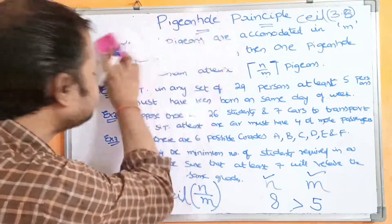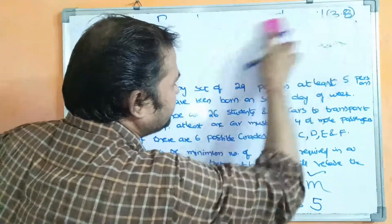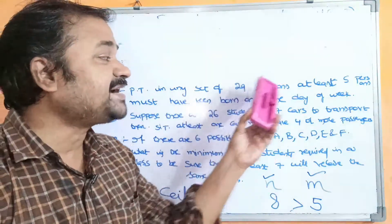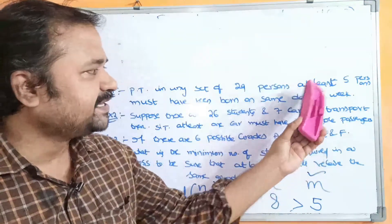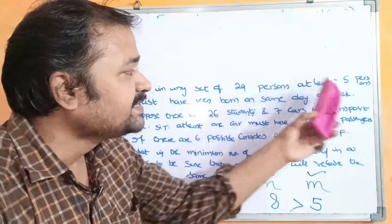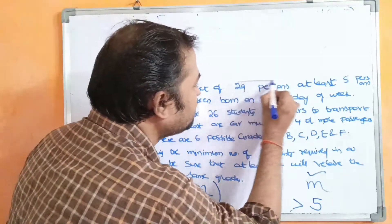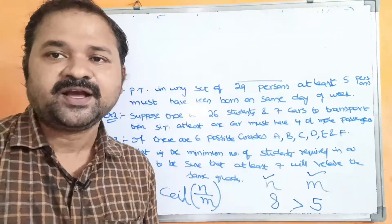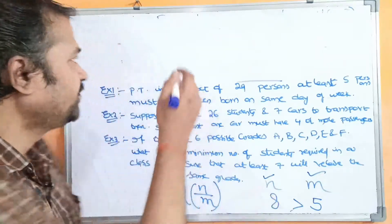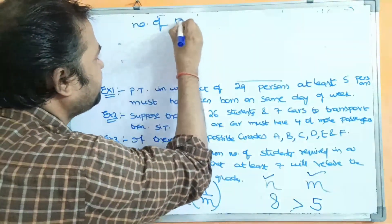Now let us solve these three examples. The first problem: prove that in any set of 29 persons, at least 5 persons must have been born on the same day of the week. How many persons are given? 29 persons. So the number of persons is n.